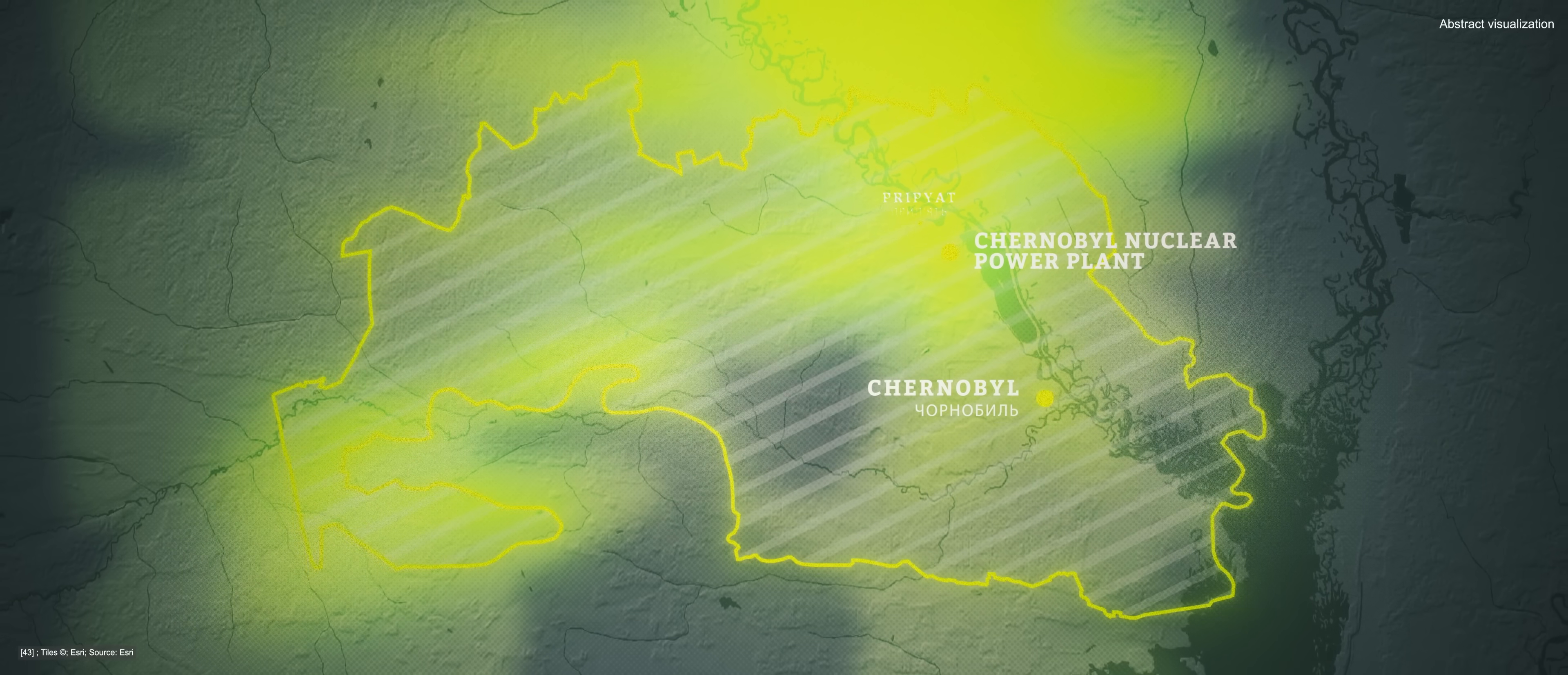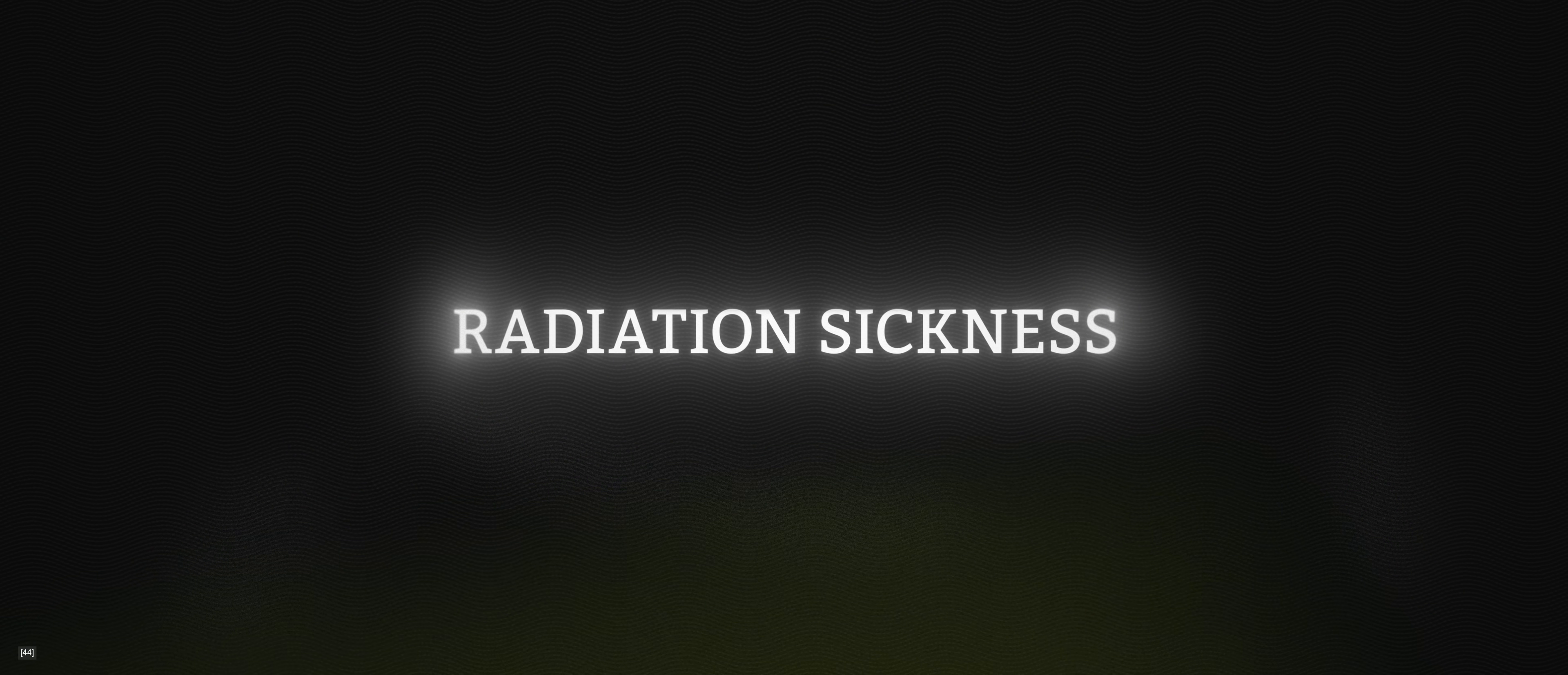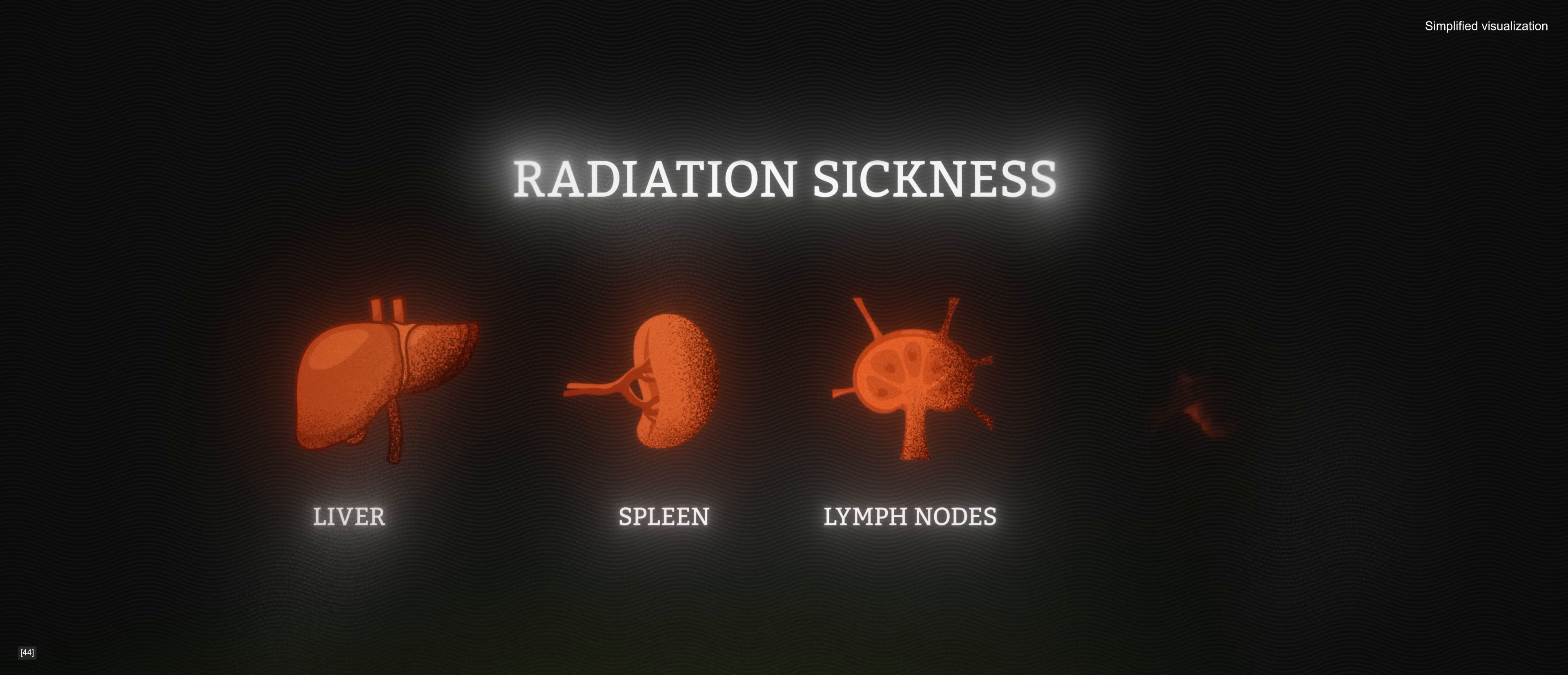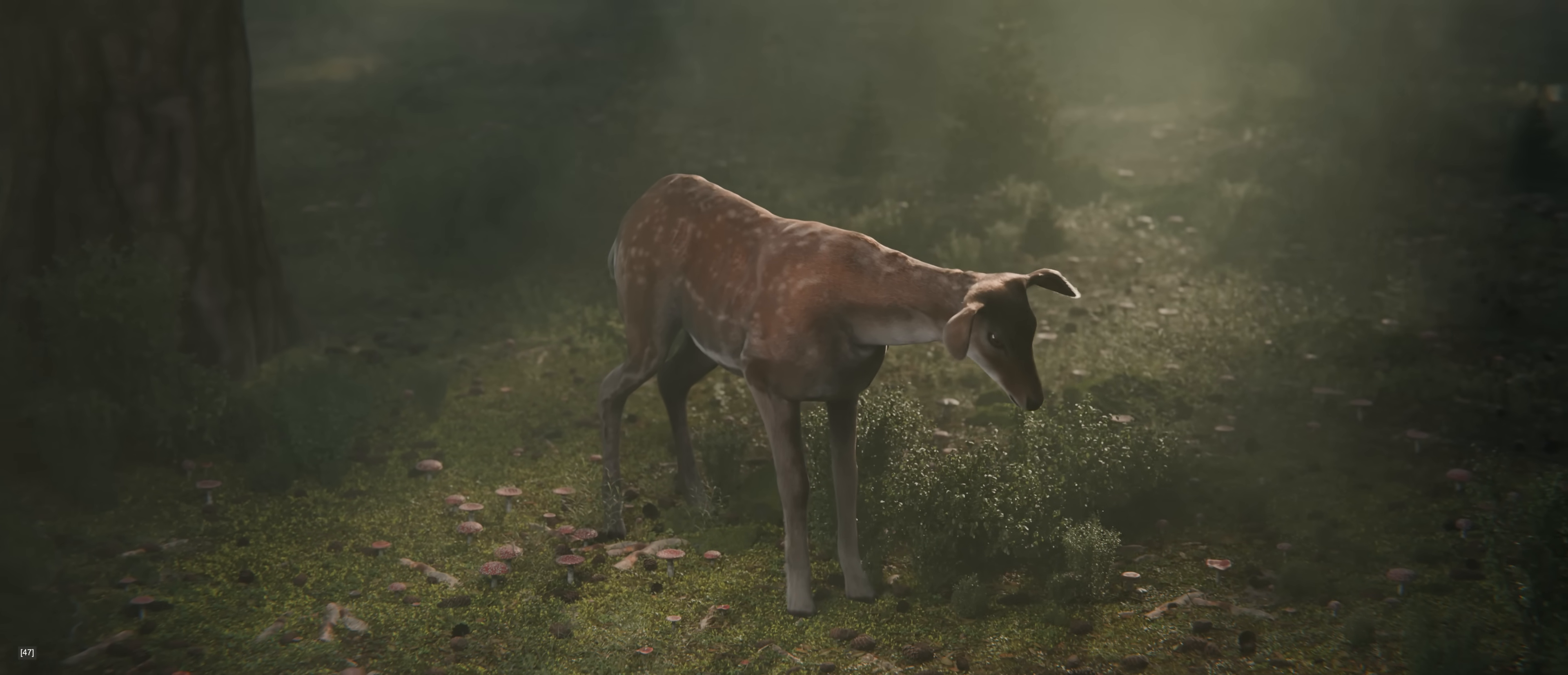Radiation remains dangerously high for months. Many animals develop chronic radiation sickness. Blood pools in their livers and spleens. Lymph nodes swell. Thyroids fail. The animals grow thin, and many die.